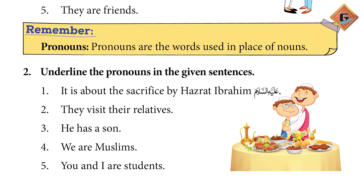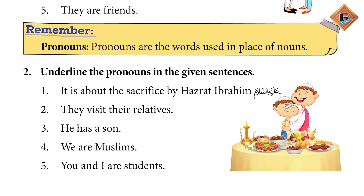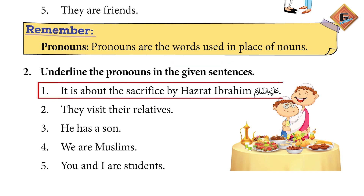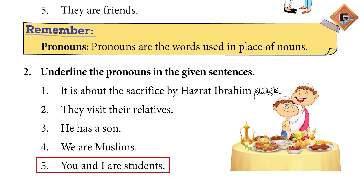Now let's move to pronouns. Pronouns are words that we use in place of nouns — you can also call them substitute words — such as I, she, he, we, you. These are our pronouns. Question number two says: underline the pronouns in the given sentences. It's about the sacrifice by Hazrat Ibrahim (AS) — 'it' is underlined. They visit their relatives — 'they' is underlined. He has a son — 'he' is underlined. We are Muslims — 'we' is underlined. You and I are students — both 'you' and 'I' are underlined on the screen.